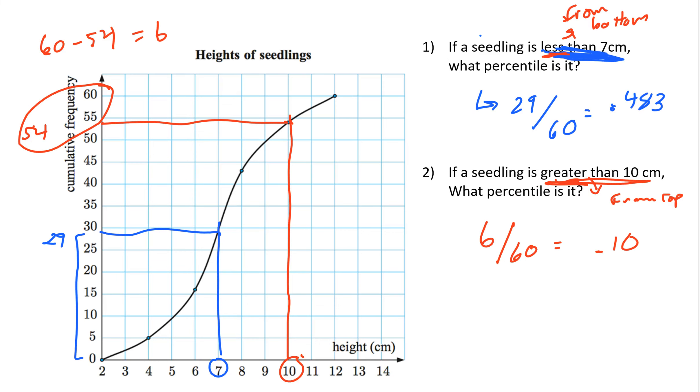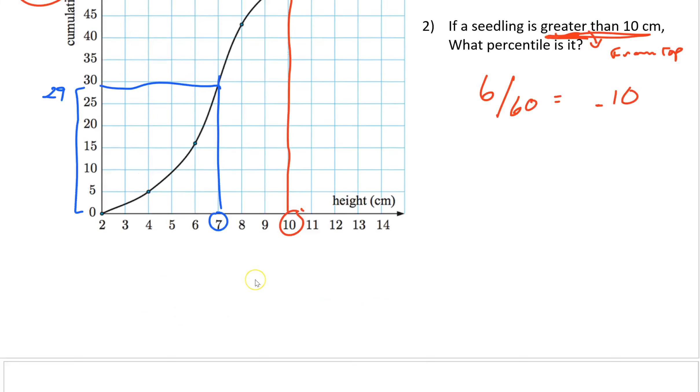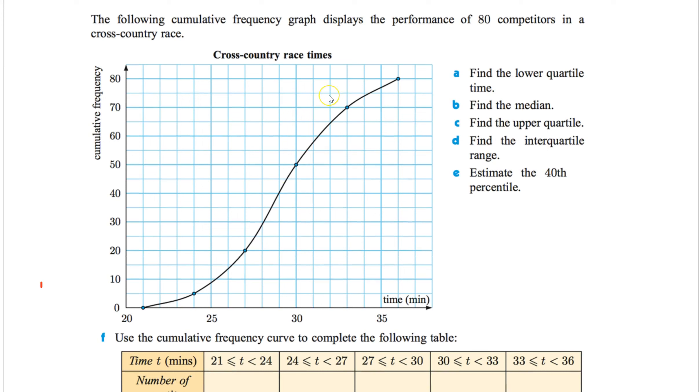Now let's do some real examples. So let's look at the example right here. The following cumulative frequency graph displays the performance of 80 competitors in a cross-country race. So let's look at this. Notice 80 is my max. There's 80 people that went on the race. Now these are different times. So you could go as fast as 21 minutes and as slow as 35, 36 minutes.